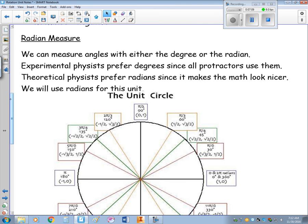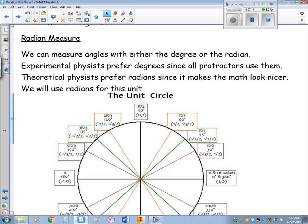Actually, I'll talk about it right now. Radians. We can express theta, or the angles, with either degrees or radians. Experimental physicists tend to prefer degrees, since protractors are very easy to use. Theoretical physicists prefer radians. It kind of makes the math look a little nicer. We're going to stick with radians for our unit.